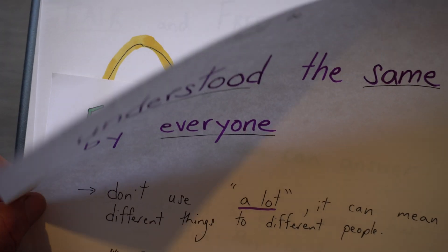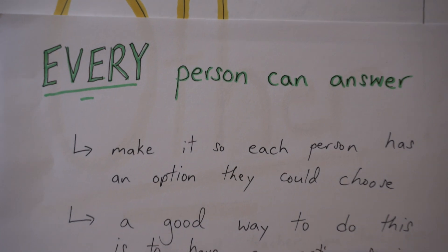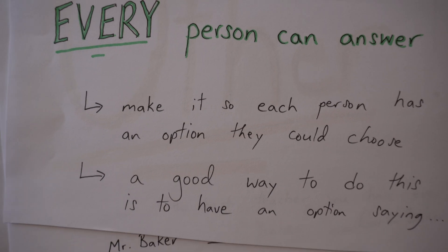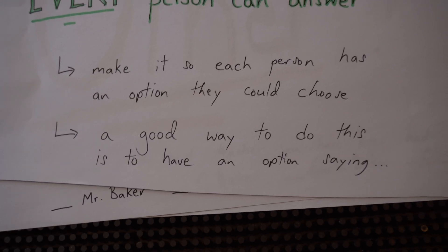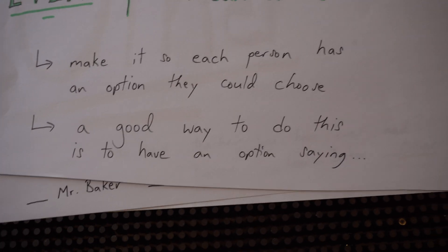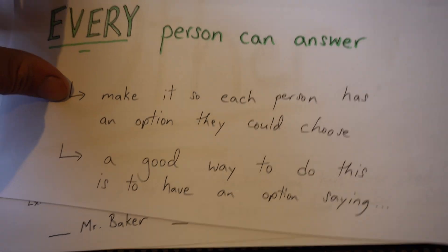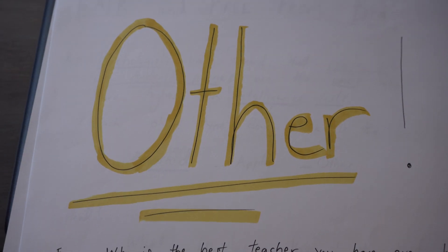The next thing is: every person should be able to answer. You want to make sure that everybody has at least one option they can choose. A good way to do this is to include an 'other' option.